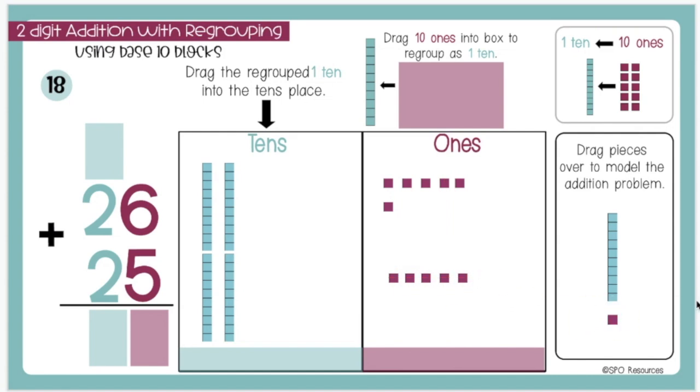Now that I have all my pieces on the place value mat, I will start by counting the total number of pieces I have in the 1s place. If I have more than 10 1s in the 1s place, I will need to regroup them as 1 10.